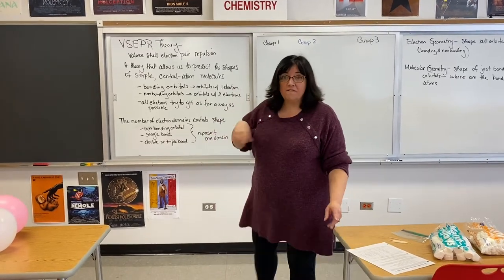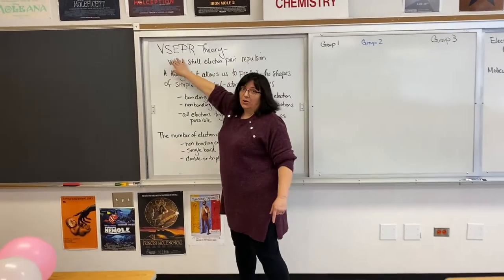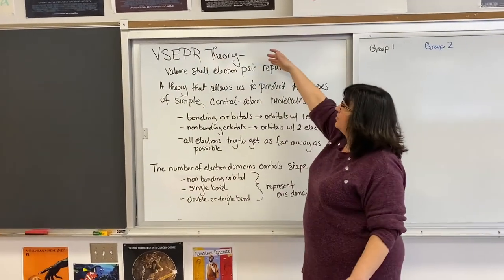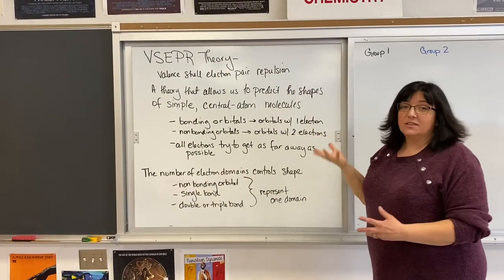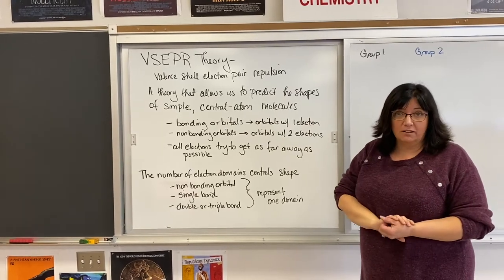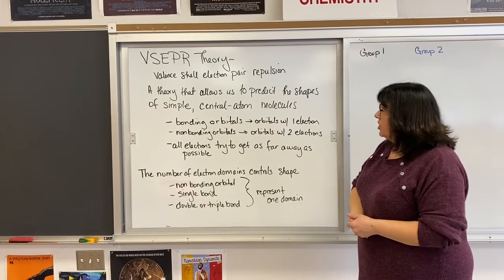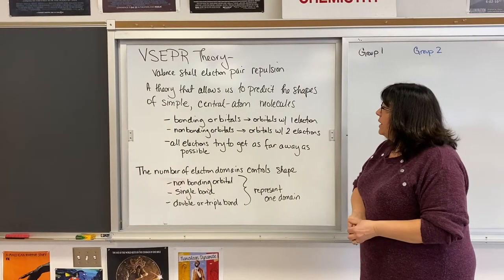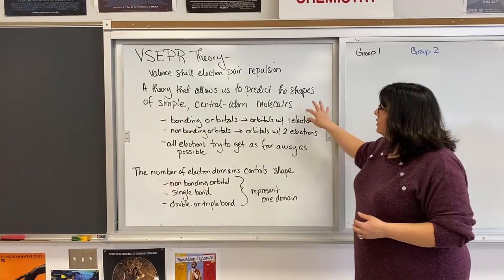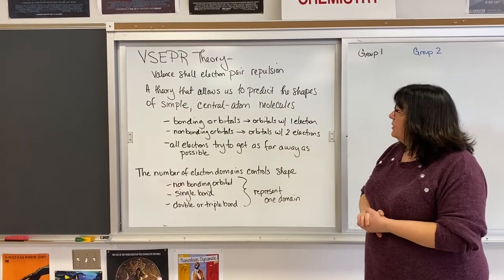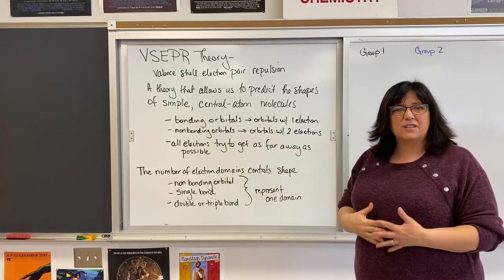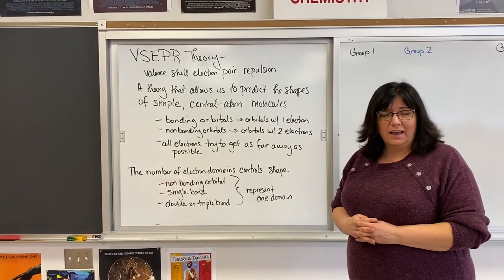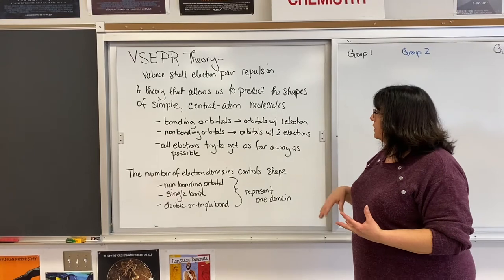VSEPR — the acronym V-S-E-P-R — stands for valence shell electron pair repulsion theory. It's going to allow us to predict the three-dimensional shapes of very simple central atom molecules, not really big molecules, but smaller ones.